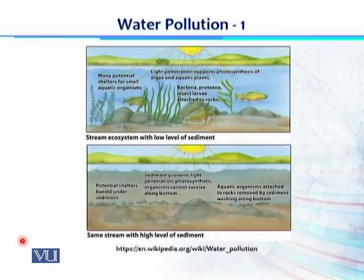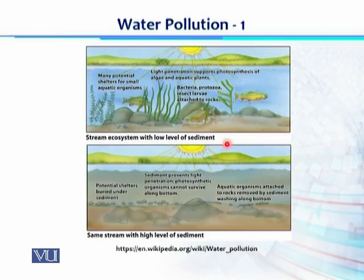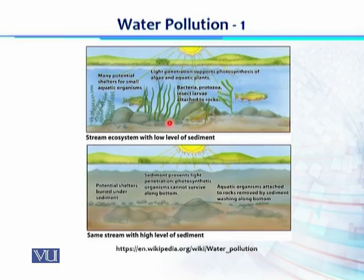In this image we can study the effect of sediment pollution in a natural water body. This is a stream ecosystem with a low level of sedimentation. Natural erosion also adds sediments to water bodies, but human activities enhance and magnify it, causing imbalance. In this healthy ecosystem, light penetration is good, water turbidity is low, and there are many shelters for small organisms on the bottom. Bacteria, protozoa, insect larvae have a substrate and surface on rocks for attachment.